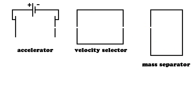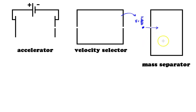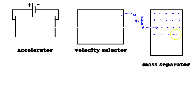Now the particle comes into the last section: the mass separator. Remember, what I'm trying to do is find out exactly what the mass of this particle is. This particle is moving in with a velocity equal to E over B from the velocity selector. This new room — the mass separator — actually has only one field in it: a uniform magnetic field. In this diagram we have the field pointing out of the page, though it could point in — it does need to be perpendicular to the surface.